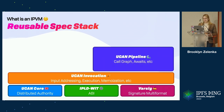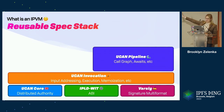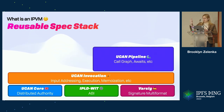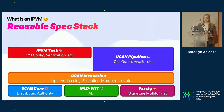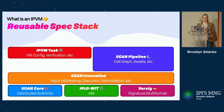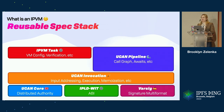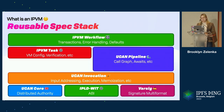We have UCAN invocation, which does input addressing, execution, memoization, and a bunch of that stuff. The same spec actually includes pipelines, which is call graphs, awaits, et cetera — those might get split out into their own separate ones. We have IPVM tasks, which is around the computations — if you want to say I need a limit on how long this thing can run, or fuel limits on WASM, you can configure the shell that's going to run it. And workflows, which is your transactions, error handling, defaults, things like that.